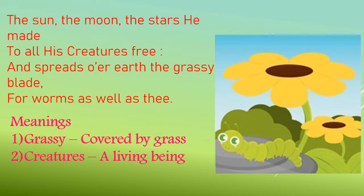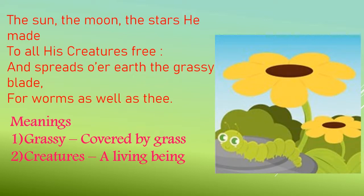In the third stanza, 'The sun, the moon, the stars he made to all his creatures free, and spread o'er earth the grassy blade for worms as well as thee,' the poet says that the creator generously gifted the sun, the moon, and the stars to all his creatures. Every living thing is free — a gift from God. The grassy blade spread over the earth was laid out by God both for the worm as well as for mankind — for every human being as well as for small and tiny creatures.